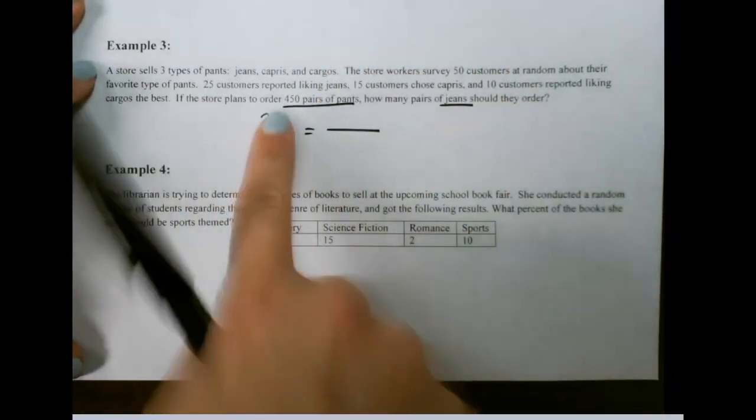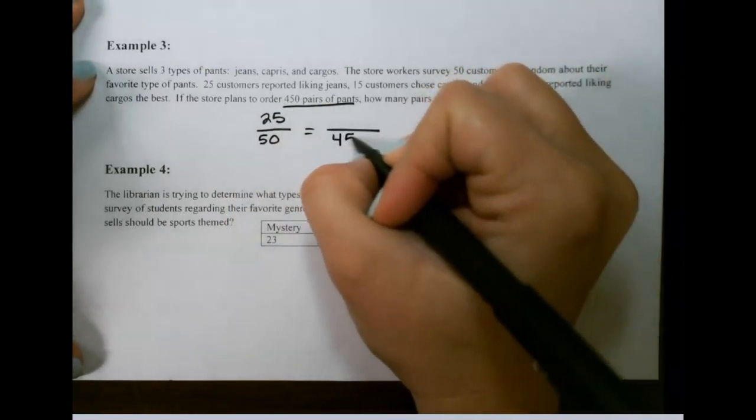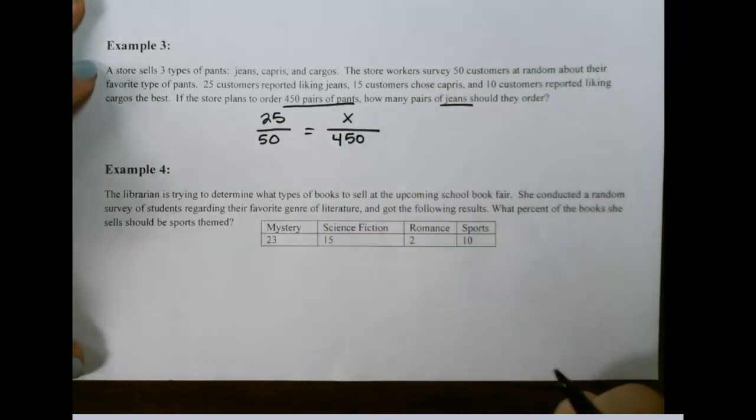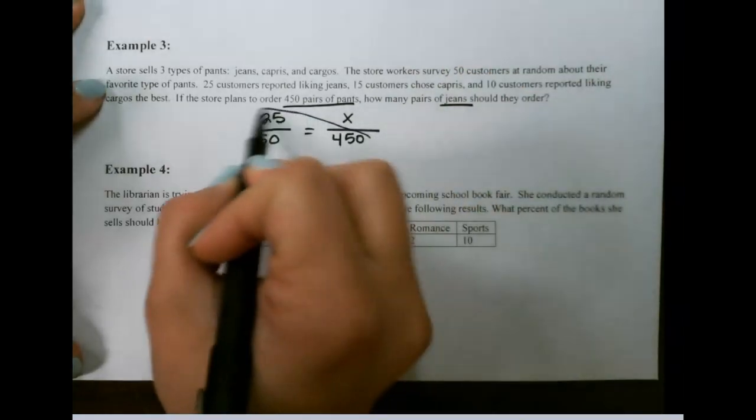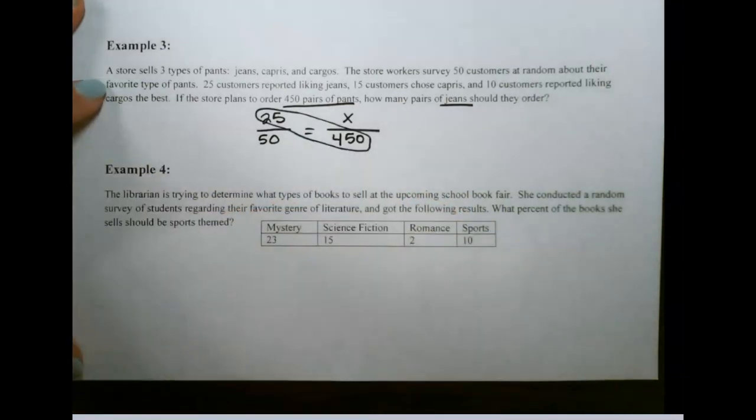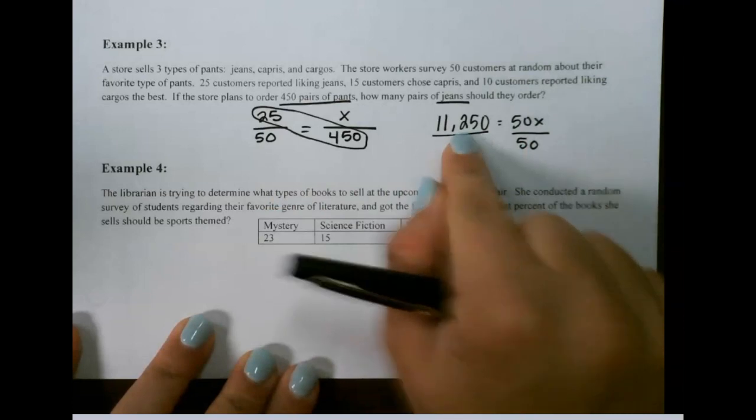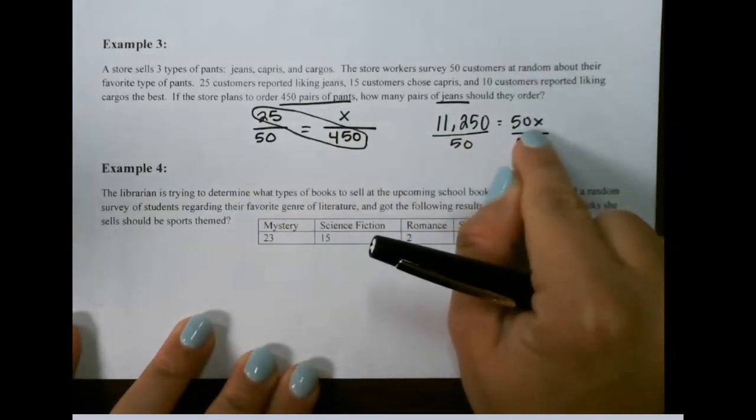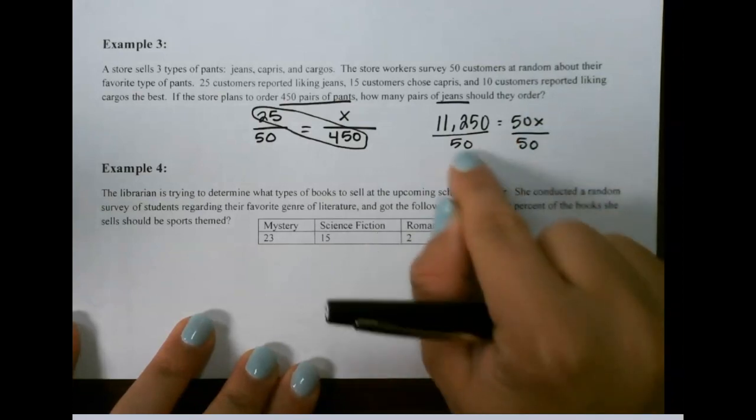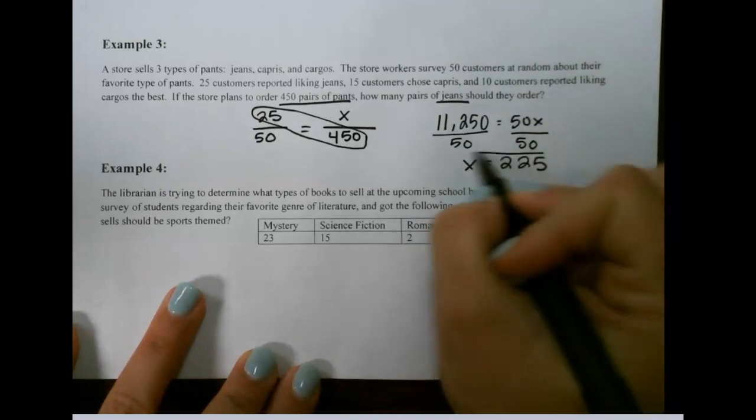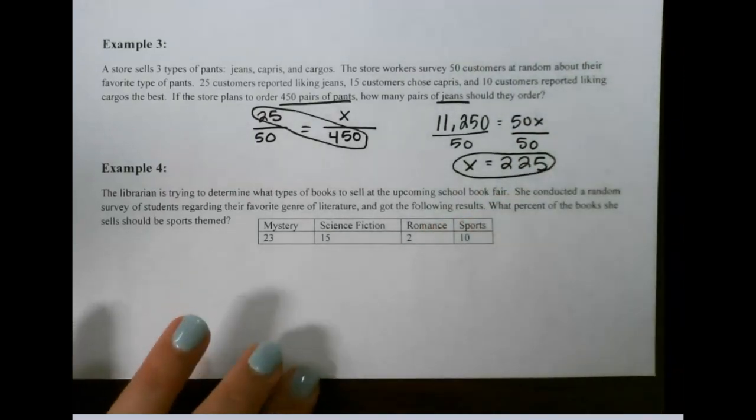If we're ordering 450 pairs, we need to figure out how many pairs of jeans to order. I'm going to cross multiply. When we cross multiply, we get 11,250. And 50 times x gives us 50x on this side. Then to get x by itself, we divide by 50. That tells us they would need to order 225 pairs of jeans.